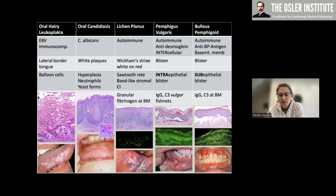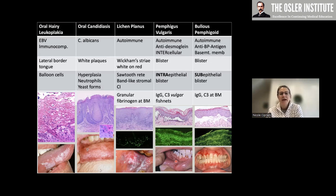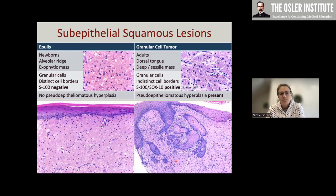As you'll see over the next four hours, I like charts because they're helpful for memorization and comparison — so where applicable I've included them. Moving deeper into the stroma, there are some subepithelial lesions, including two that I've grouped together because they are histologically similar but clinically very different.